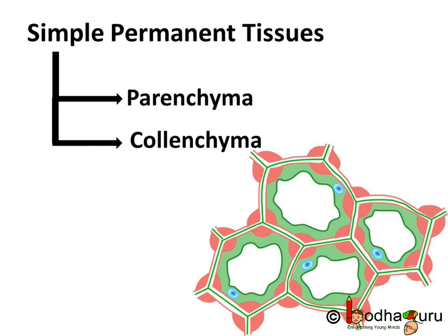Plants can easily bend at various parts such as stem, leaves, etc. This flexibility in plants is due to another type of simple permanent tissue called collenchyma. Collenchyma allows easy bending in various parts of the plant without breaking and provides mechanical strength. These tissues can be found in the leaf stalk, that is in the petiole, below the epidermis layer, which is the outermost layer of the cell. The cells of collenchyma tissue are living, elongated and irregularly thickened at the corners, and hence there is very little intercellular space.